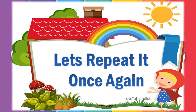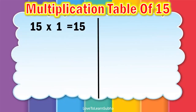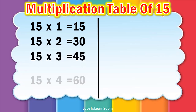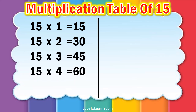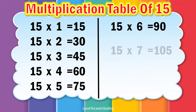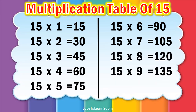Now let's repeat it once again. 15 ones are 15, 15 twos are 30, 15 threes are 45, 15 fours are 60, 15 fives are 75, 15 sixes are 90, 15 sevens are 105, 15 eights are 120, 15 nines are 135, 15 tens are 150.